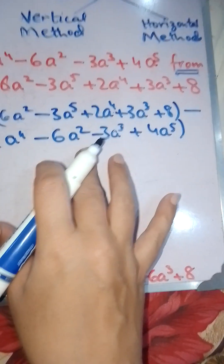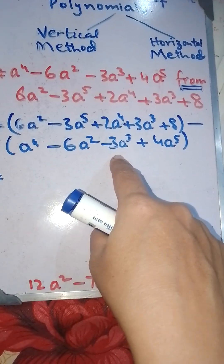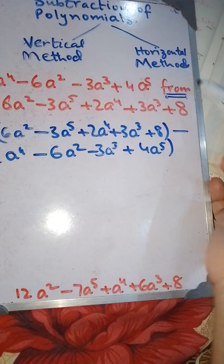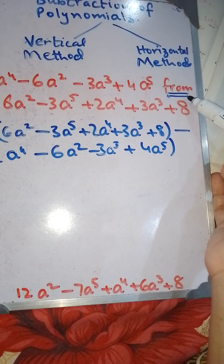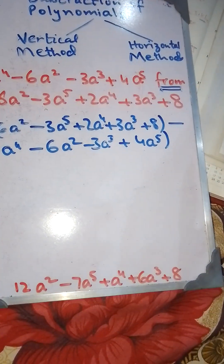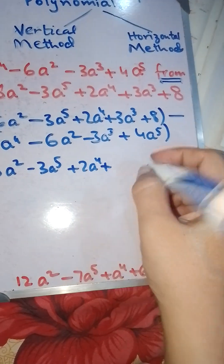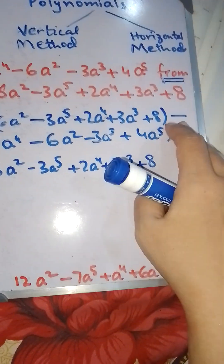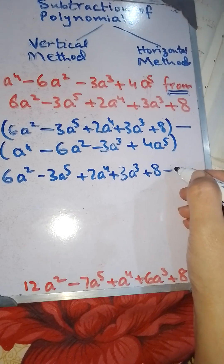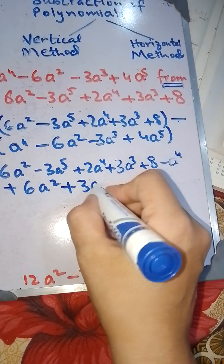Now moving to the horizontal method. I have written the expression here with brackets and a negative sign — that is the presentation for the horizontal method. I again picked up the last expression written after the 'from' word and wrote it first, then put a minus sign and the first expression in brackets. So we have 6a² minus 3a⁵ plus 2a⁴ plus 3a³ plus 8, then minus will be introduced inside the bracket and every term will change its sign.